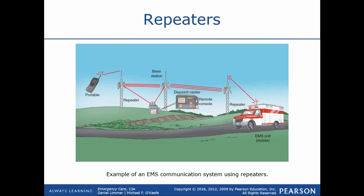Cell phones work off a slightly different technology. While they mostly work off tower technology, some work off satellites as well. What you need to know for the exam: a mobile radio is attached to a vehicle; a portable radio is handheld. A repeater picks up a signal, amplifies it, and retransmits it. A base station is typically attached to a dispatch center and allows the core of the communication to occur.